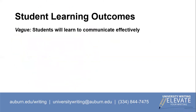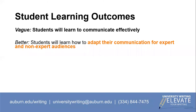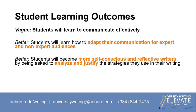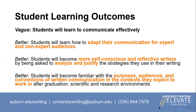Now let's practice improving some learning goals. We will start with our example: 'Students will learn to communicate effectively.' First, let's look at an example that better addresses the audience. Now let's look at an example that identifies discrete skills. Finally, let's look at an example that takes up the rhetorical context. All of these examples better explain what students are expected to learn and be able to do.